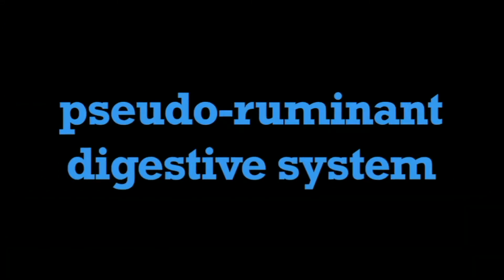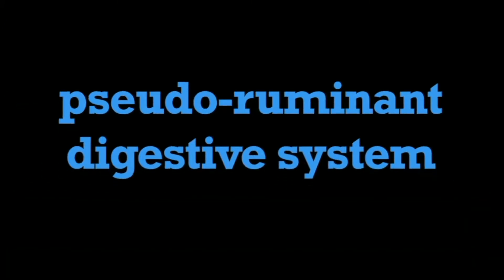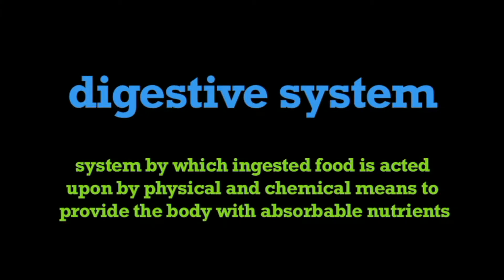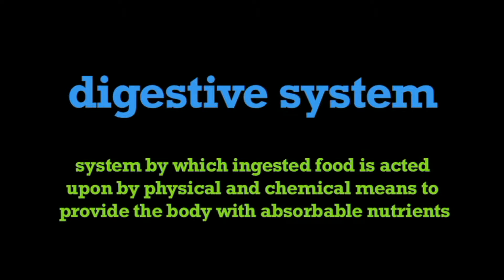In this program, we're going to learn about the Pseudo-Ruminant Digestive System. Animals with a Pseudo-Ruminant Digestive System have a large stomach divided into three compartments. A digestive system is the system by which ingested food is acted upon by physical and chemical means to provide the body with absorbable nutrients.